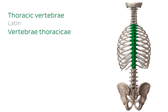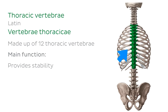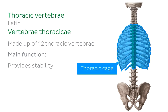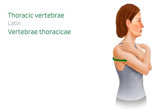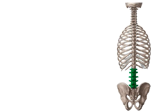The thoracic spine is made up of 12 thoracic vertebrae, and its main function is to provide stability. Unlike other sections of the vertebral column, the thoracic vertebrae articulate with the ribs to form a strong bony enclosure called the thoracic cage, which houses and protects vital organs such as the heart and lungs. In terms of mobility, the thoracic spine assists with the rotation of the vertebral column.